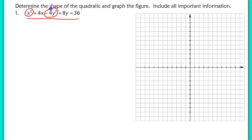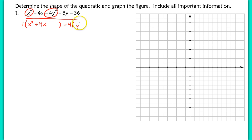Here's one quadratic term and here's the other. The lead coefficient for the x-squared term is 1, so we don't have to factor it out, but I will for consistency. Make sure you don't factor out an x — only factor out the lead coefficient. I'm going to factor out a negative 4 from the second quadratic part, leaving y-squared minus 2y, because the sign is going to change. Then another space and equals 36. Now we work on completing the square.